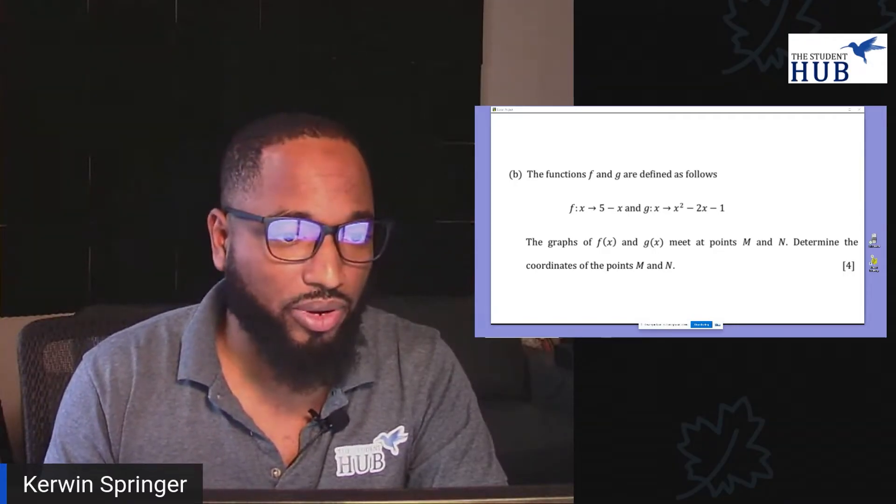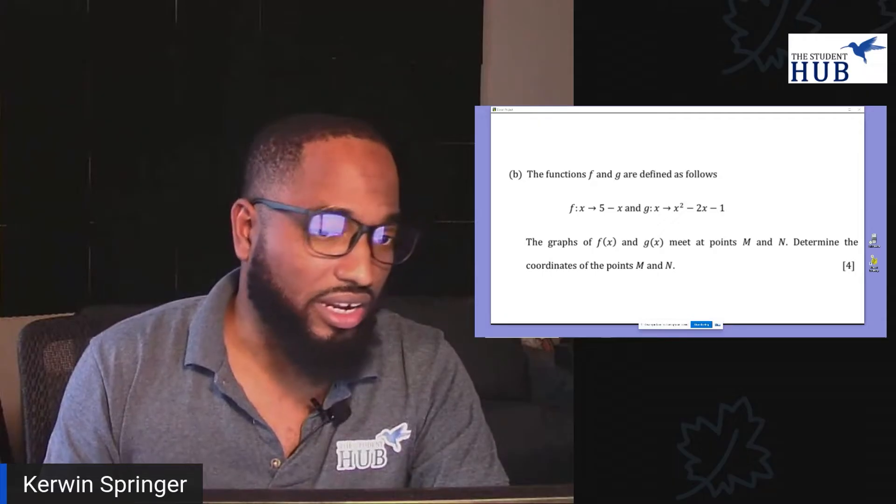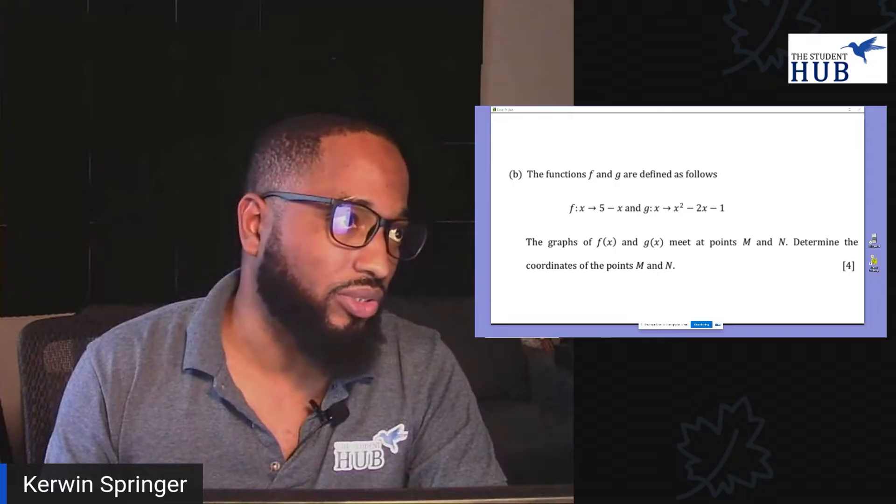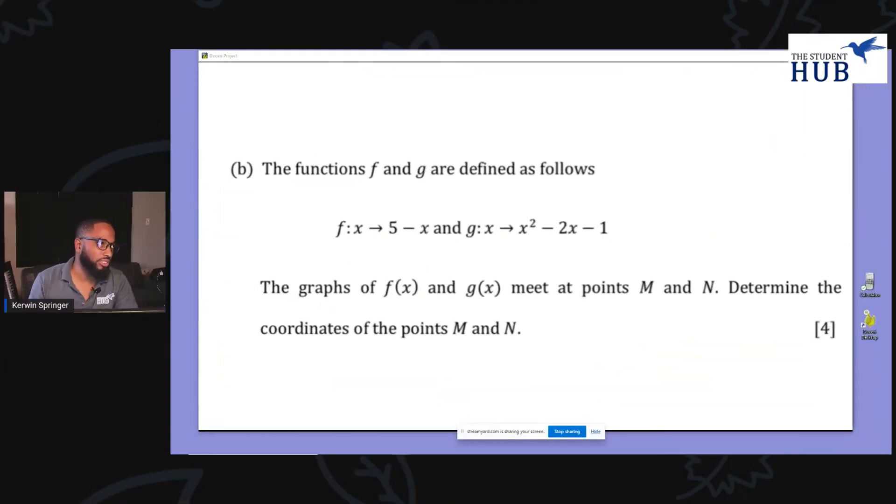Simultaneous equations can be employed here. When we have a linear equation—you see in f(x) there is linear and g(x) is a quadratic equation. So let me make it bigger and let's jump into it. The functions f and g are defined as follows: f(x) equals 5 minus x and g(x) equals x squared minus 2x minus 1. What we need to do is solve this simultaneously to find the points where the graphs of f(x) and g(x) meet at points M and N.